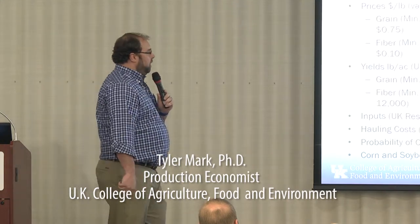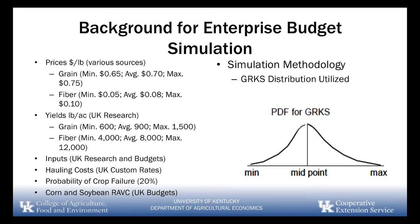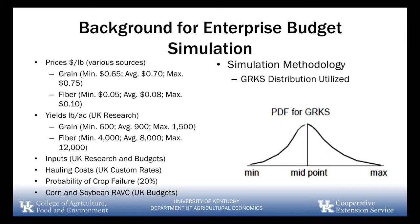How do hemp returns compare? To get at this, we've set up a model to simulate what might happen. As far as grain prices, we're looking at somewhere between 65 cents and 75 cents, and there's an escalator in there for if you're over a certain yield, price goes up. On the fiber side, we're looking at somewhere between 5 cents and 10 cents. On grain yields, we're looking at 600 pounds an acre up to 1,500 pounds an acre.